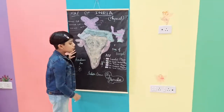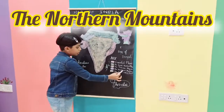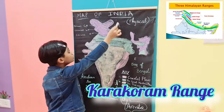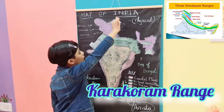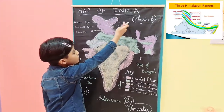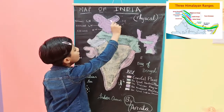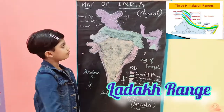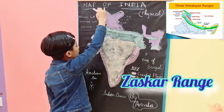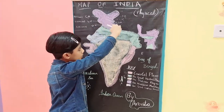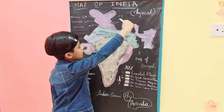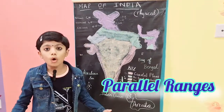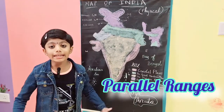Let's start one by one, starting with the northern mountains. The Karakoram range lies towards the northern boundary of India. Towards the south of the Karakoram range, we have the Ladakh range and the Zaska range. The Himalayas extend along the northern boundary of India in the form of an arc. These are called the parallel ranges.